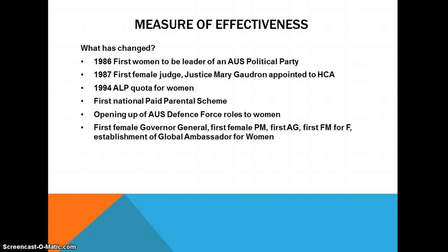Despite still-existing problems, you must look at effectiveness and how much has changed. In 1986, Janine Haines became the first woman to lead an Australian political party. In 1987, Justice Mary Gaudron was the first female judge appointed to the High Court of Australia. In 1994, the ALP introduced a quota requiring 35% of candidates be women. Australia also saw its first national paid parental leave scheme, plans to open all ADF roles including combat roles to women, and its first female Governor-General, Prime Minister, Attorney-General, Minister for Finance, and in 2011, the inaugural Global Ambassador for Women.